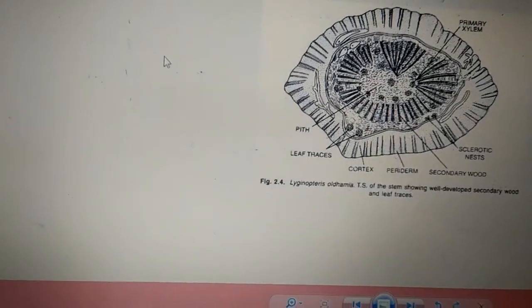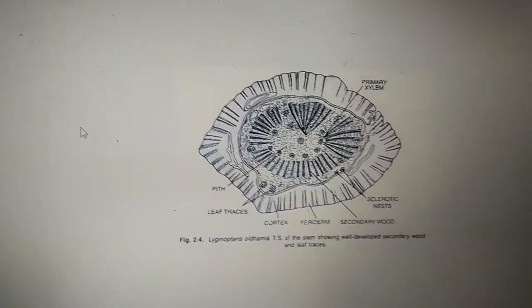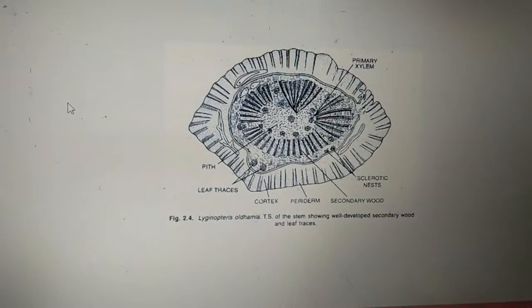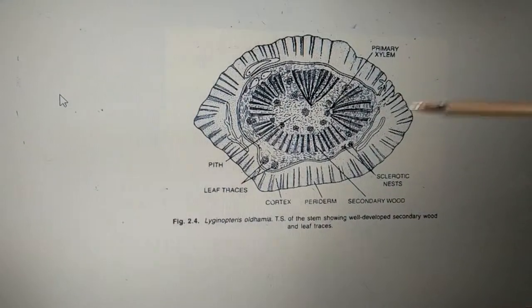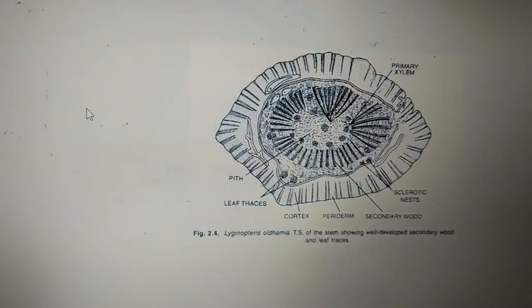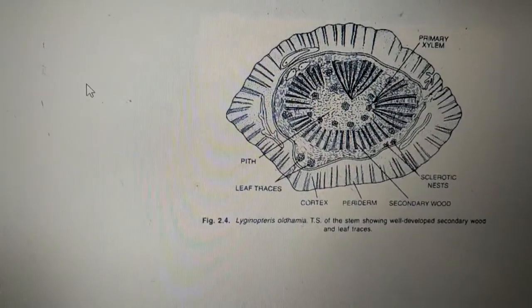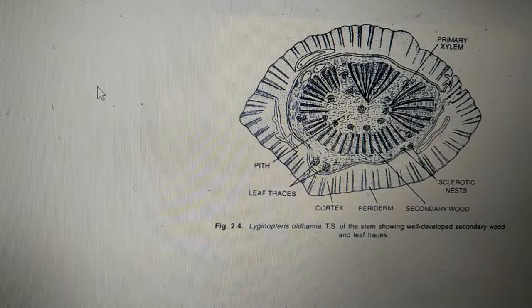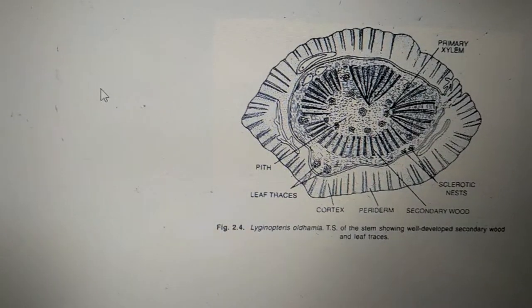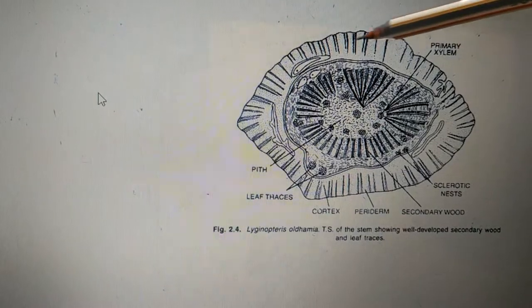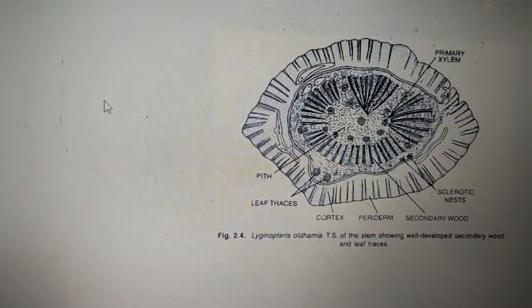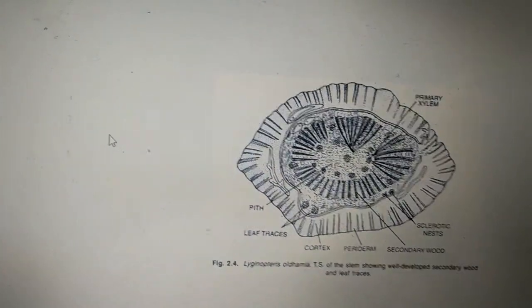Now discussing the anatomical features of Lyginopteris. Here we have a beautiful image of a fossil stem of Lyginopteris. This stem fossil is going to give us detail like we have a broad cortex bounded by a single epidermis, so the outermost layer will be the single epidermis.